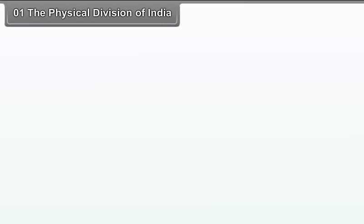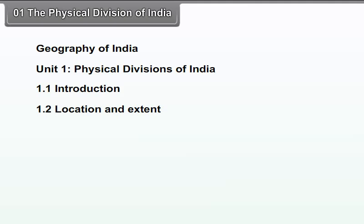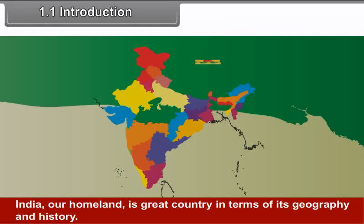Chapter 1 – The Physical Divisions of India. We will study the following points in this chapter: Introduction, Location and Extent, Surrounding Nations, Process of Identification of a Region, and Physical Divisions.